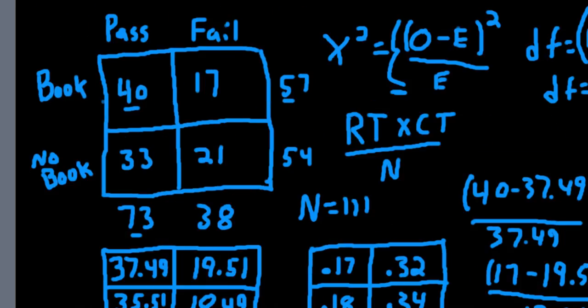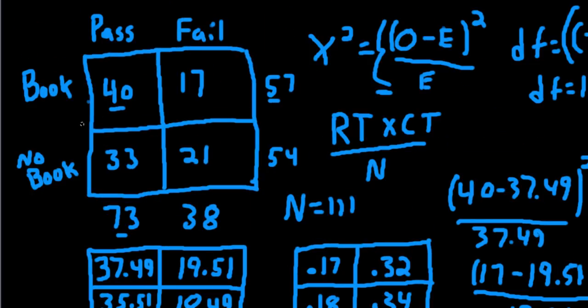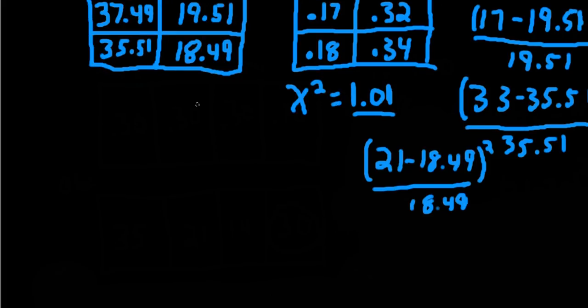I'm going to go on and compute the relative risk, even though there's not a significant relationship by any means between these two variables. Let's go ahead and compute the relative risk for failing the class for those who don't have the book and those who have the book. So for those who have the book, 17 out of 57 people failed. So if you have the book, 17 out of 57 failed.